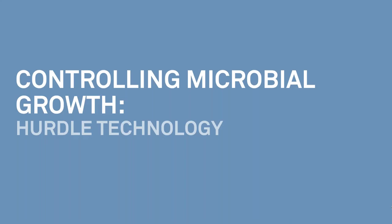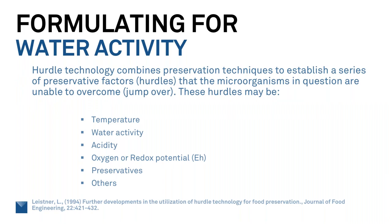The last thing to cover is hurdle technology. Hurdle technology combines preservation techniques to establish a series of preservative factors — or hurdles — that the microorganism in question is unable to overcome. Hurdles might include temperature like refrigeration, reducing water activity, increasing acid, reducing oxygen, or adding a preservative. The key is that these factors can be combined so their effects are additive, making the environment where microbes can't grow.